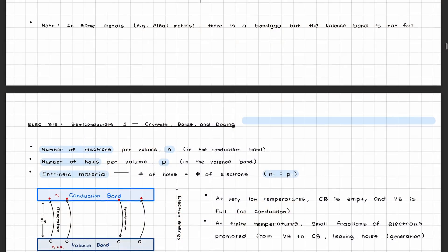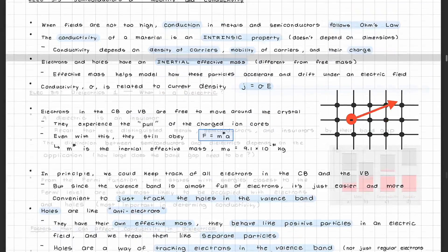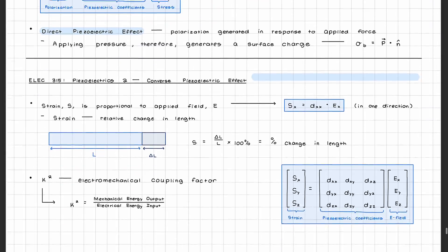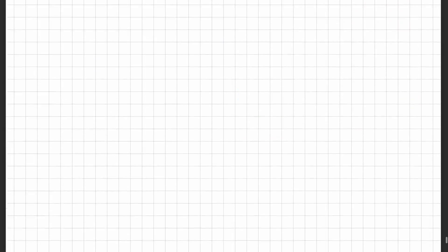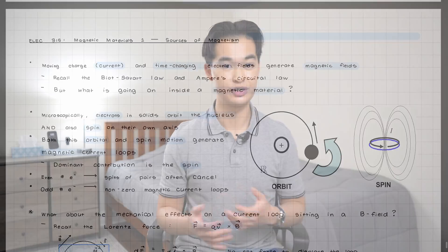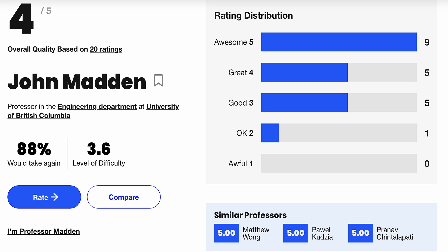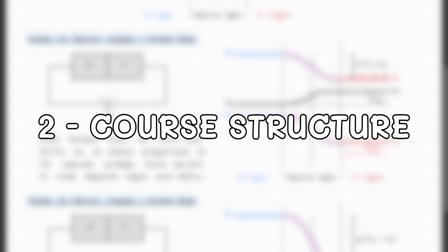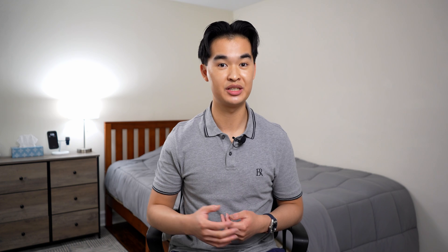In this course, you'll learn about electronic materials and devices, covering the fundamental aspects of basic electronics components such as semiconductors, dielectrics, piezoelectrics, magnetic materials, and their applications in devices such as diodes and transistors. This course is offered in both semesters during the winter term, and during my year, Term 1 was taught by Professor John Madden, and Term 2 was taught by Professor Payman Servati. Now that we know what the course is about, let's get into how ELEC 315 will be structured for any given week and the materials that you'll need for this course.